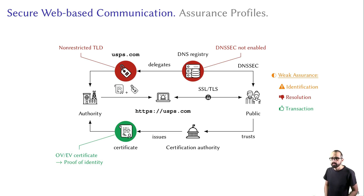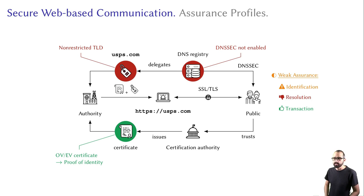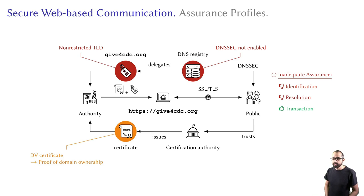If you have neither DNSSEC nor a restricted TLD — as is the case for usps.com — and only provide an OV or EV certificate, resolution is susceptible to hijacking and identification only works if resolution succeeds properly, so the server can provide the OV certificate. We also call this a weak assurance profile. Finally, if you only provide a DV certificate without DNSSEC or a restricted TLD — as is the case for the CDC Foundation's gift4cdc.org — then identification and resolution are both insecure, and we say this provides only an inadequate assurance profile.